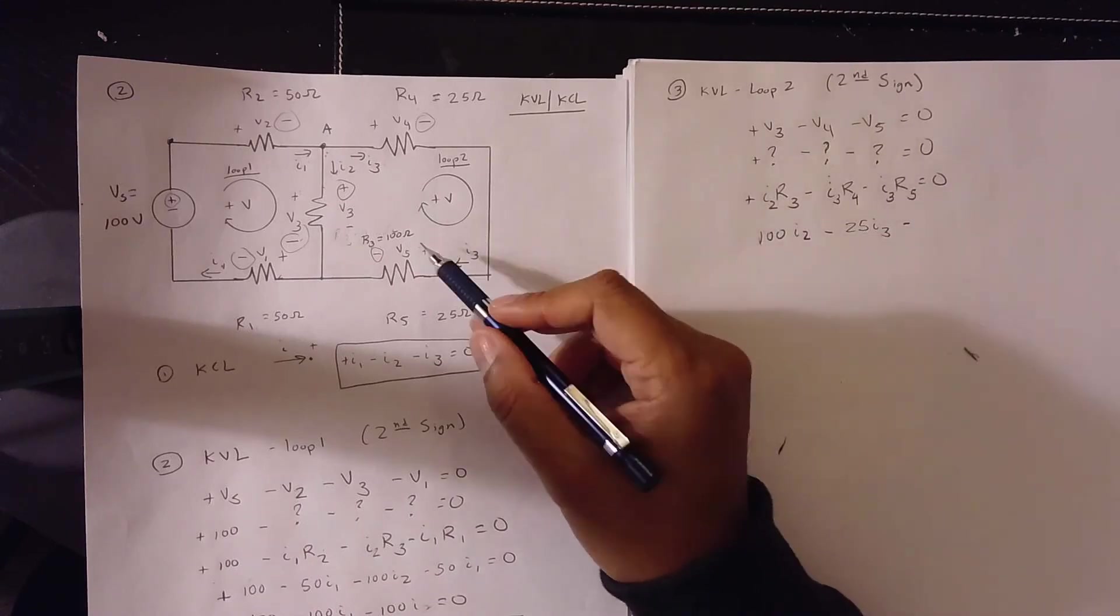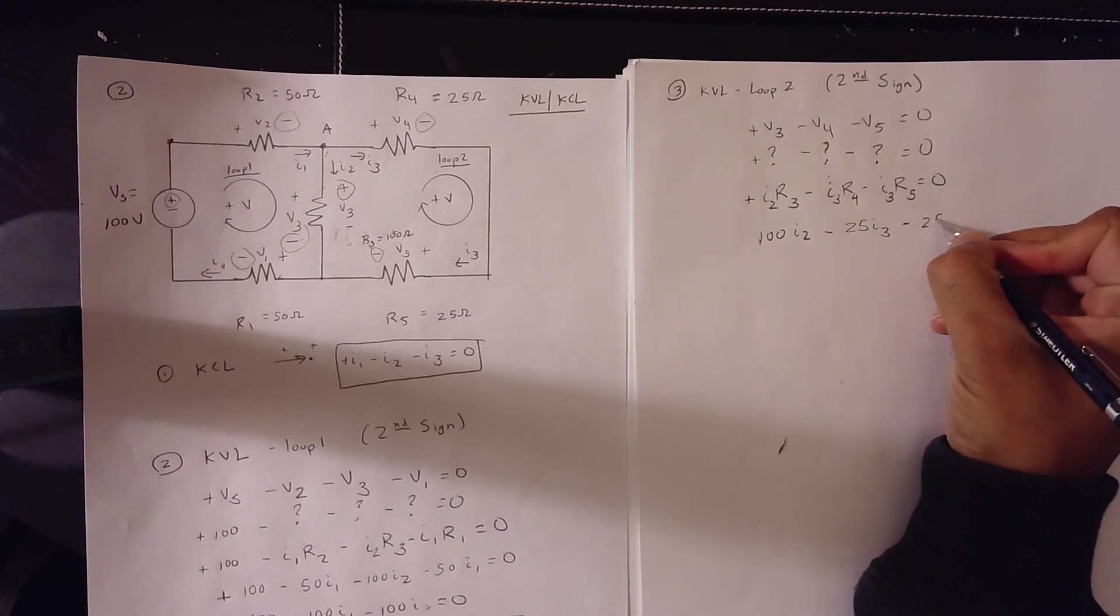25 I3. R5 is 25. 25 I3, again, is equal to 0.